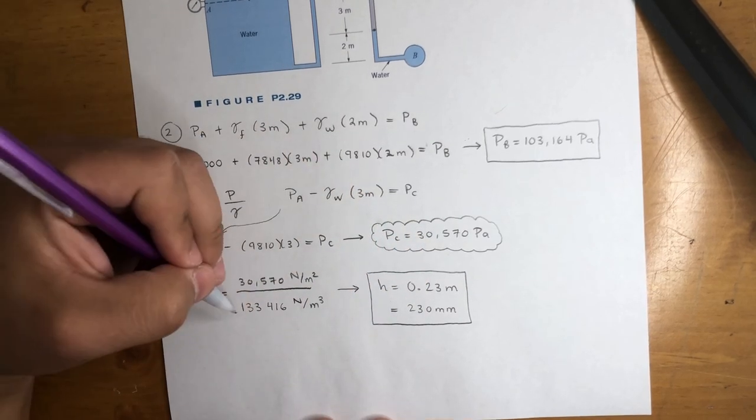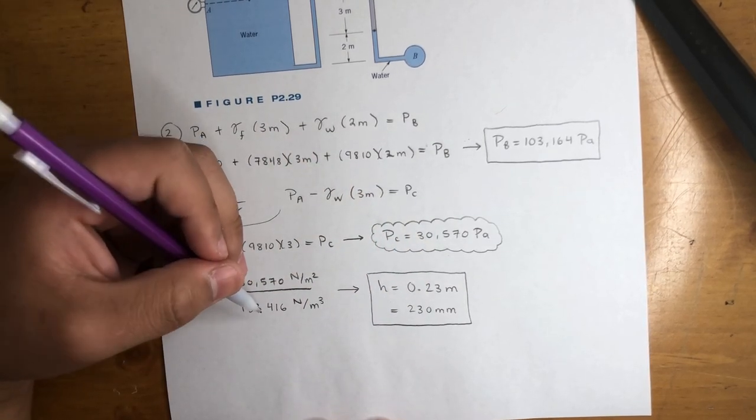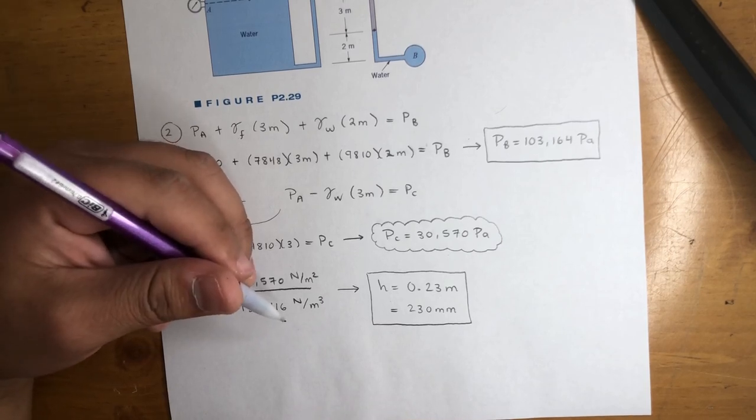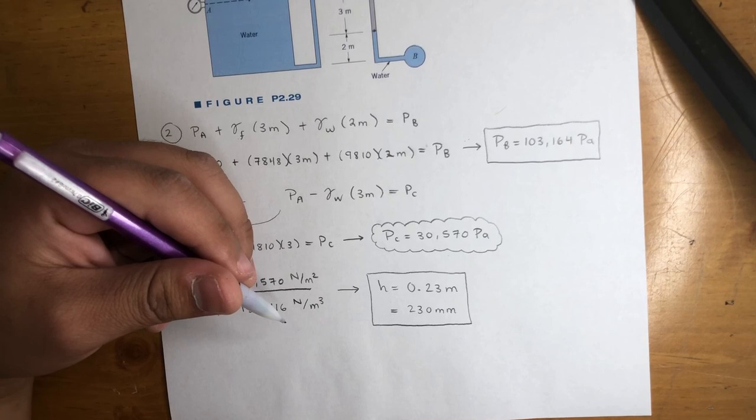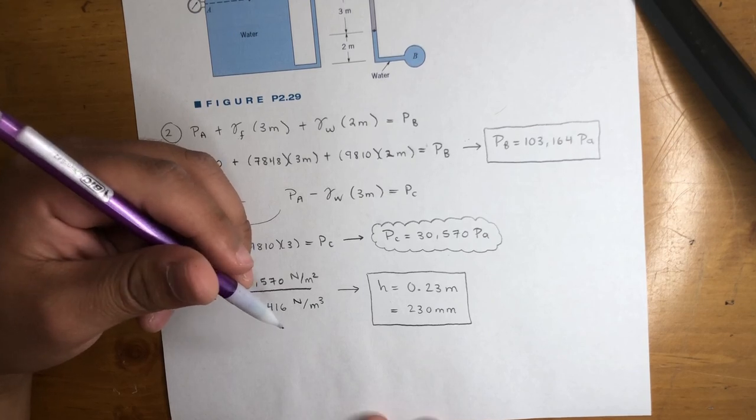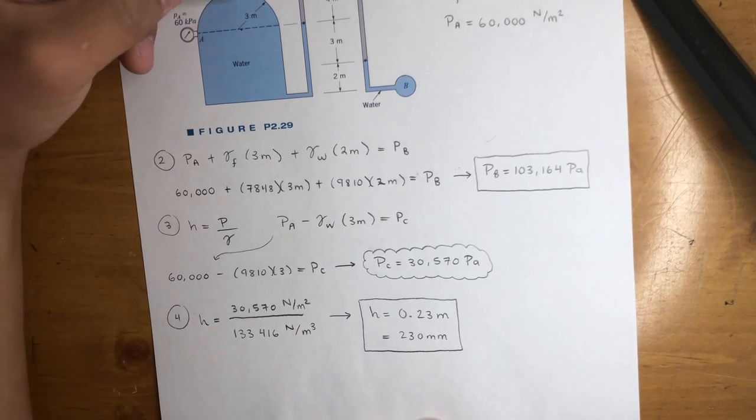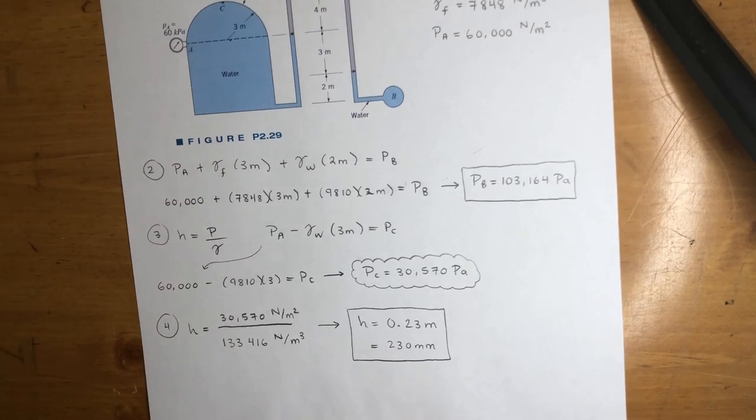I wouldn't worry about memorizing these numbers, like the specific weight of mercury. If it's on an exam, he'll give you the values and all that good stuff. This one was pretty straightforward. The reason I covered this one is just because the pressure head isn't something you see in all these types of problems, but hopefully that makes sense.